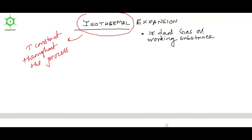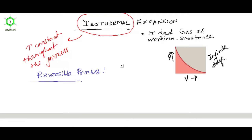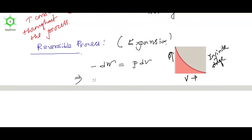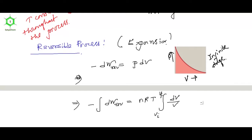For a reversible process, the PV curve is continuous, so we can easily integrate to calculate the work done. As it is an expansion, work is done by the system, so minus dW equals P dV. We integrate from Vi to Vf, substituting P with nRT/V.